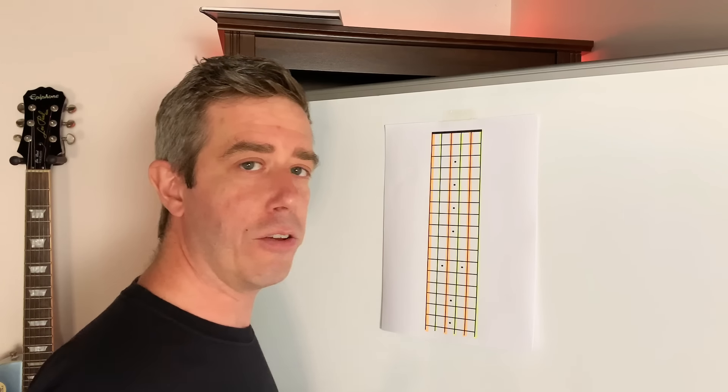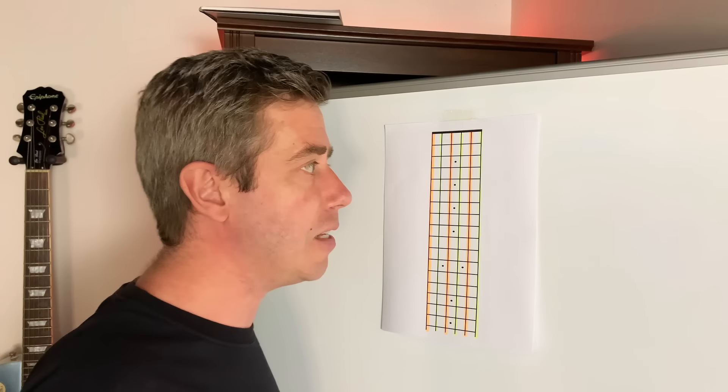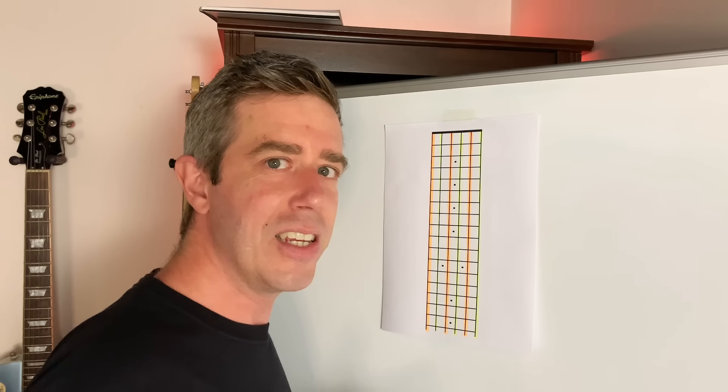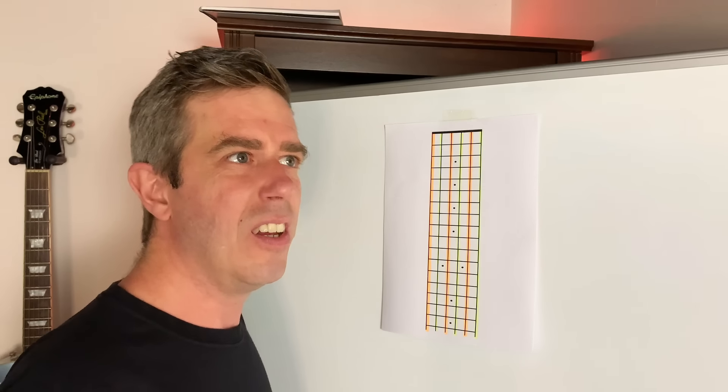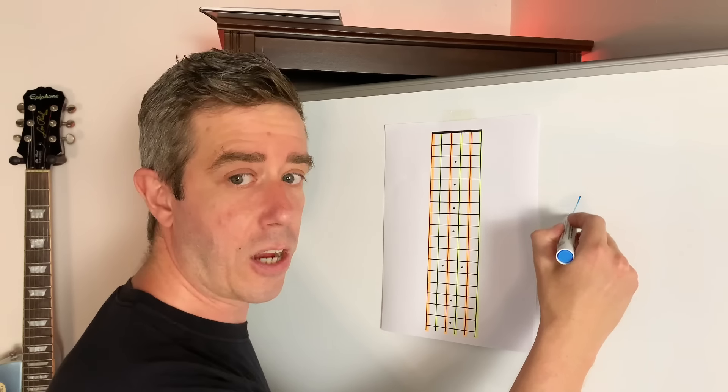Okay, so everyone's going to tell you to start learning your fretboard on the sixth string, the thickest string. And that to me makes no sense because the sixth string starts with an E note. And that's not where the musical alphabet starts. The musical alphabet starts with A.